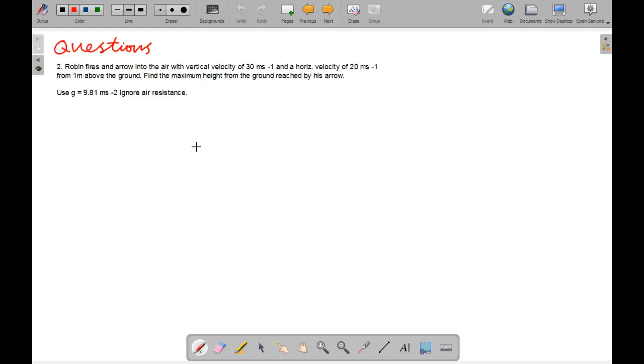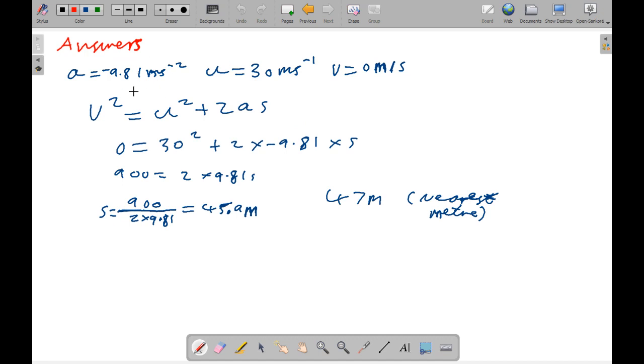Robin fires an arrow into the air with a vertical velocity of 30 ms minus 1 and a horizontal velocity of 20 from 1 meter above the ground. Find the maximum height from the ground reached by his arrow. Use g equals 9.81 and ignore air resistance. So, we're looking at the answers now. g is minus 9.81, u is 30 and v is 0. v squared equals u squared plus 2as. 0 equals 30 squared plus 2 times minus 9.81 times s because the object is going downwards. 900 equals 2 times 9.81 s. And s equals 900 over 2 times 9.81 and that equals 45.9 meters, or it's roughly 47 meters to the nearest meter.